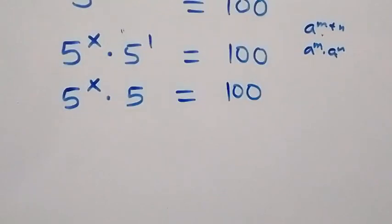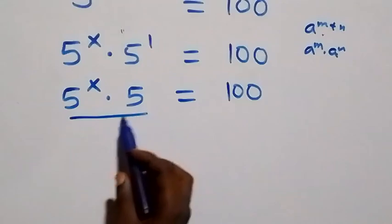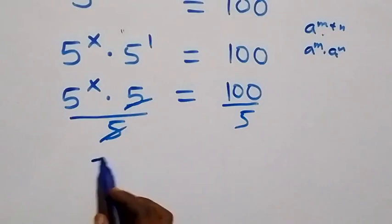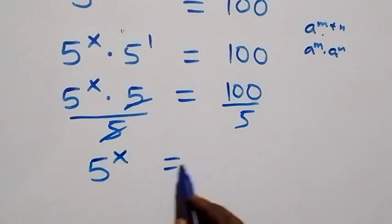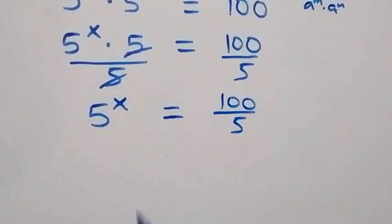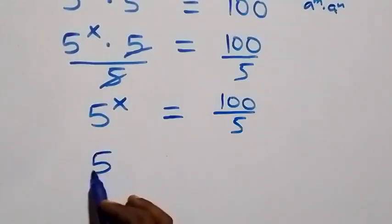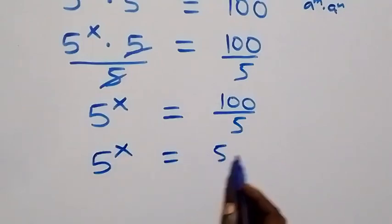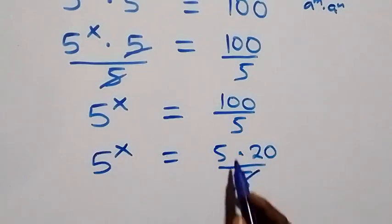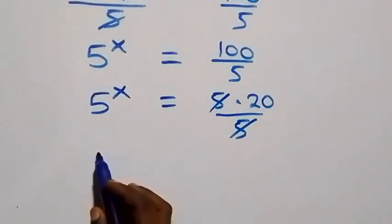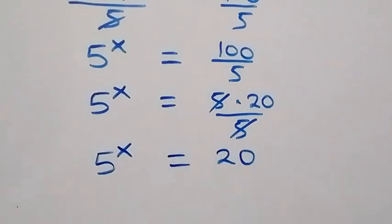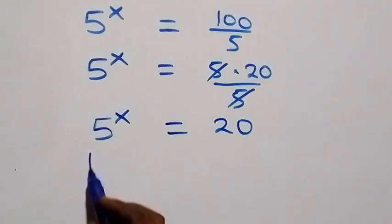Here we divide both sides by 5 — divide this side by 5 and also divide this side by 5. The fives cancel each other, and we are left with 5 raised to power x equals 100 over 5. That is, 5 times 20 over 5 — the fives cancel — then we have 5 raised to power x equals 20. Next step, we take the log on both sides.